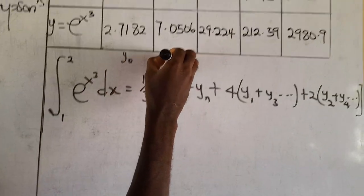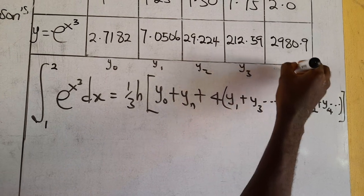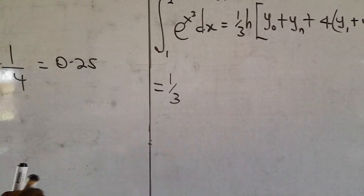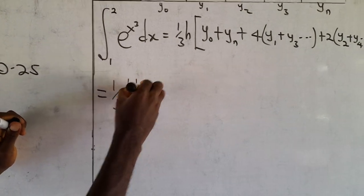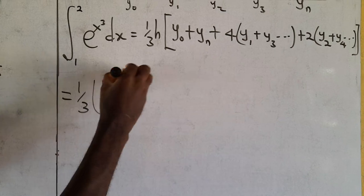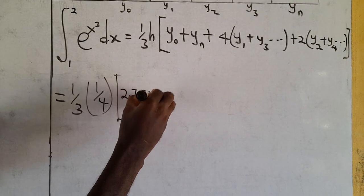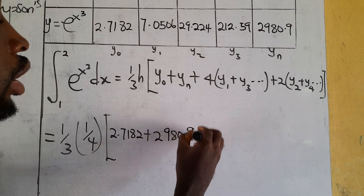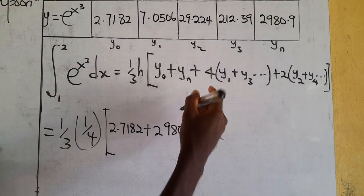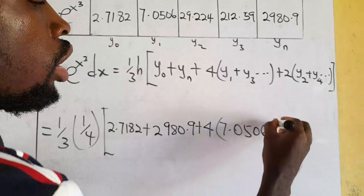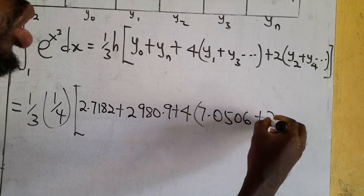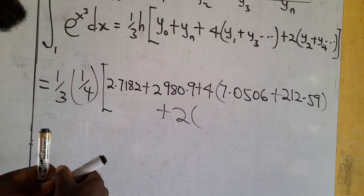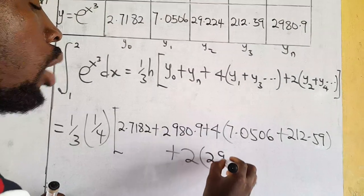The values are: y₀ = 2.7182, yₙ = 2918.9, y₁ = 7.0506, y₃ = 212.59, and y₂ = 29.224. So we compute (1/3) × (1/4) = 1/12, times [2.7182 + 2918.9 + 4×(7.0506 + 212.59) + 2×29.224].